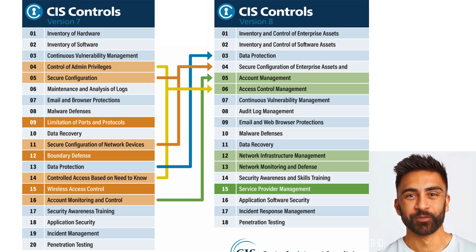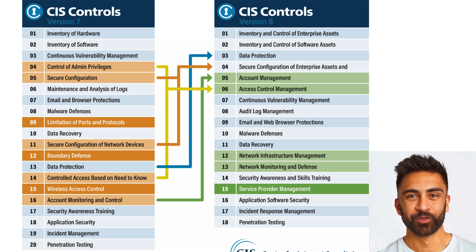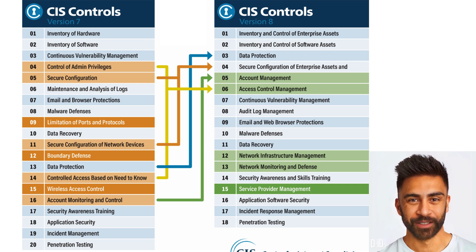Basic Controls are essential steps every organization should take, such as inventorying and controlling hardware and software assets and implementing continuous vulnerability management. Foundational Controls build on the basics and include measures like secure configuration for hardware and software, controlled use of administrative privileges, and maintenance, monitoring, and analysis of audit logs.